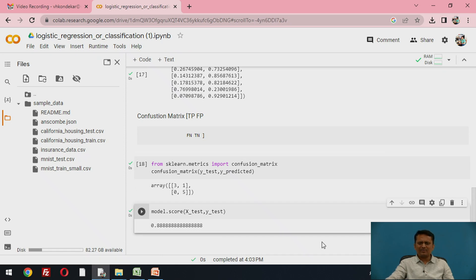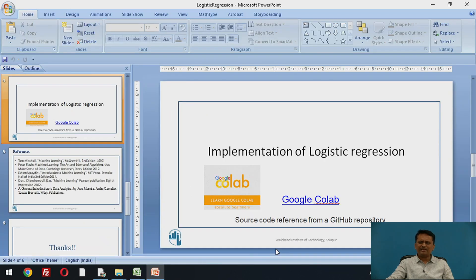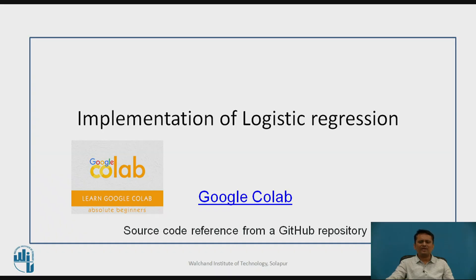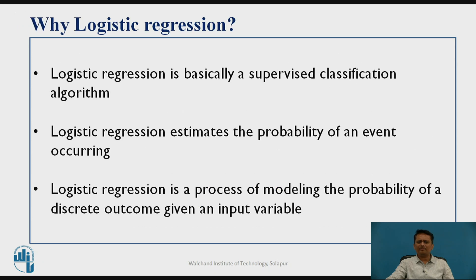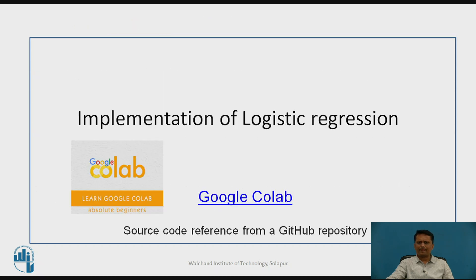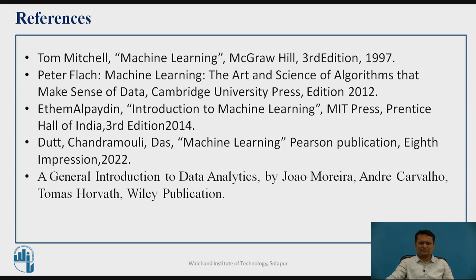This is how you can implement logistic regression for the application called classification — a supervised learning application — through Google Colab. You can check the performance of the algorithm for different values of the train-test split percentage. These are the various references used for this video presentation.